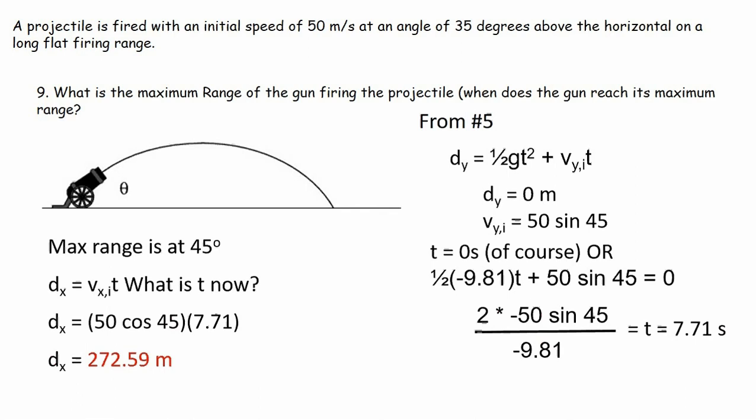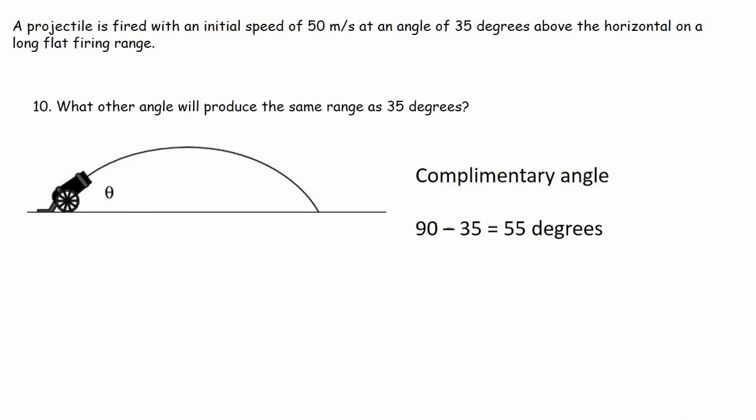All right. Last question, number 10. Going to end on an easy note here. At what other angle would produce the same range as 35 degrees? This one's just a reasonable problem right here. We're talking about complementary angles. In class, I booted up the projectile motion simulator and we found out that complementary angles should give you the same ranges. So in this case, complementary means angles that add up to 90. So our first angle is 35, so you take 90 minus 35. That's 55 degrees. 55 degrees is the other angle that will give you the same range. Now 55 degrees means it's going higher. It's going to spend more time in the air. It's going to go higher height, but it's going to travel the same distance in the x direction as 35 did because they're complements.